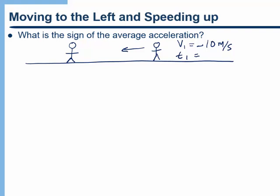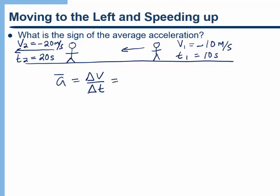And I'm going to say that happens at a time of 10 seconds — that's the time on my stopwatch. Now, later on, at a time of 20 seconds, let's say their velocity is negative 20 meters per second. So notice our person is moving to the left and they are speeding up. We can calculate what the average acceleration is — it's just delta v over delta t. The final velocity is negative 20, minus the initial velocity of negative 10, divided by delta t: the final time of 20 seconds minus the initial time of 10. That gives an acceleration of negative 1 meters per second squared.